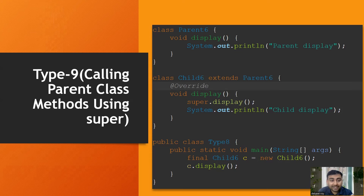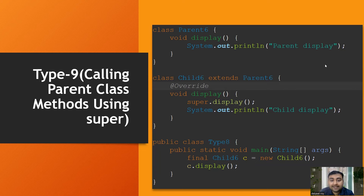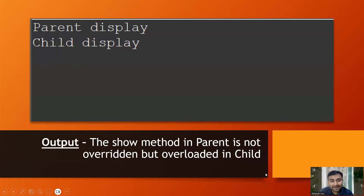Type 9 is calling the parent class method using the super keyword. Parent class has a display method; child class overrides display and inside calls super.display(). From main, we create a child object and call display(). Due to overriding it goes to the child method first, which calls super.display() — printing 'parent display' — then prints 'child display'. Output: 'parent display' then 'child display'.